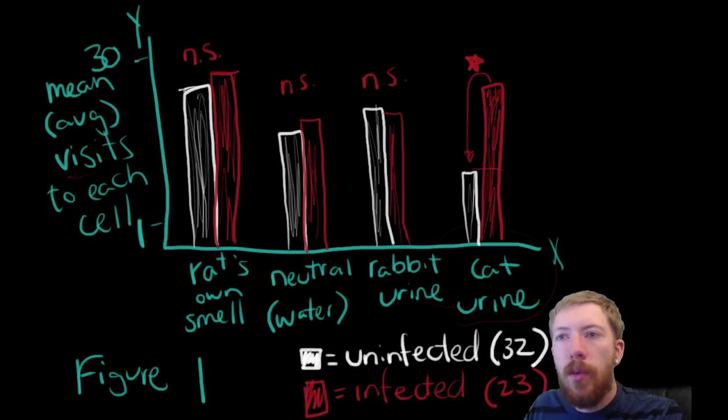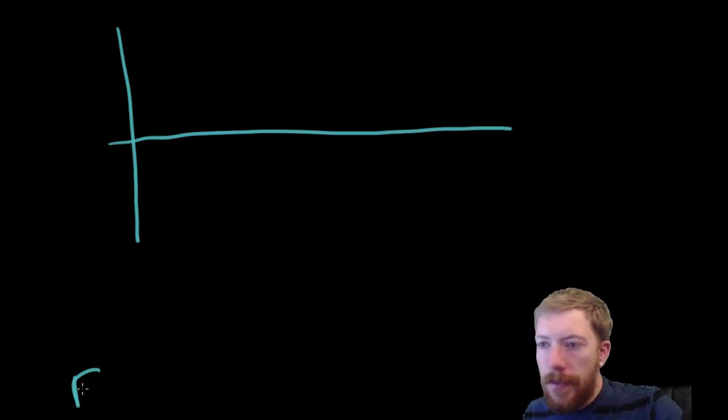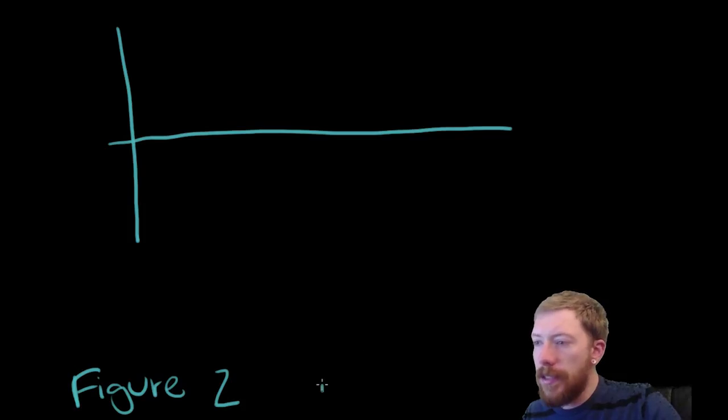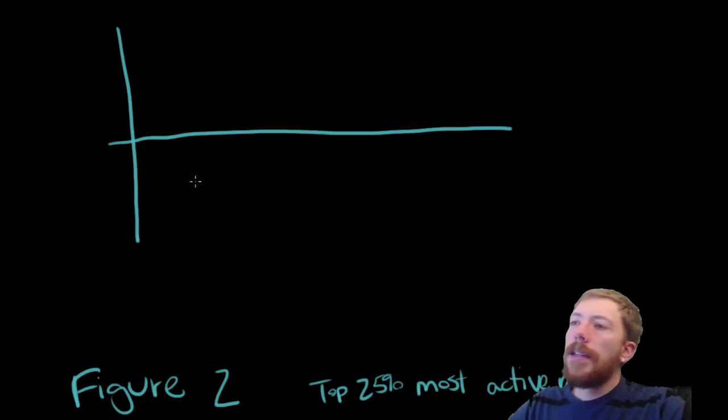So, that was figure one. That was the first thing they found. And now, let's talk about figure two. So, again, if you're following along, we are on figure two. And for this figure, they're only looking at the top 25% most active rats. And again, I want to start by just defining these two axes.